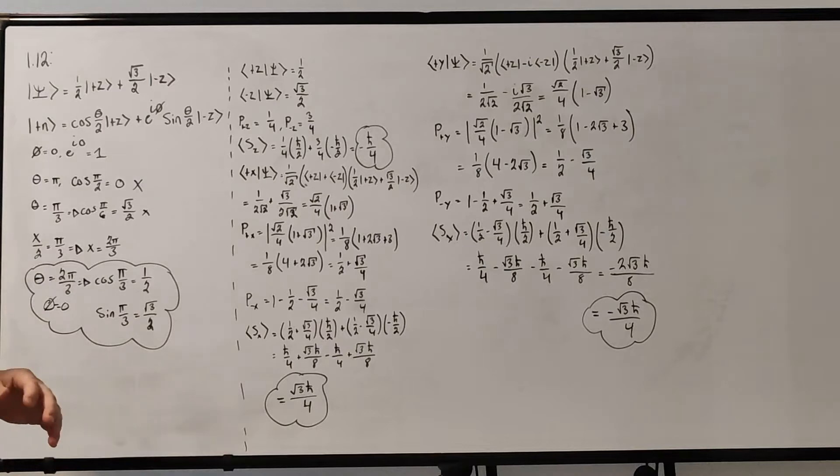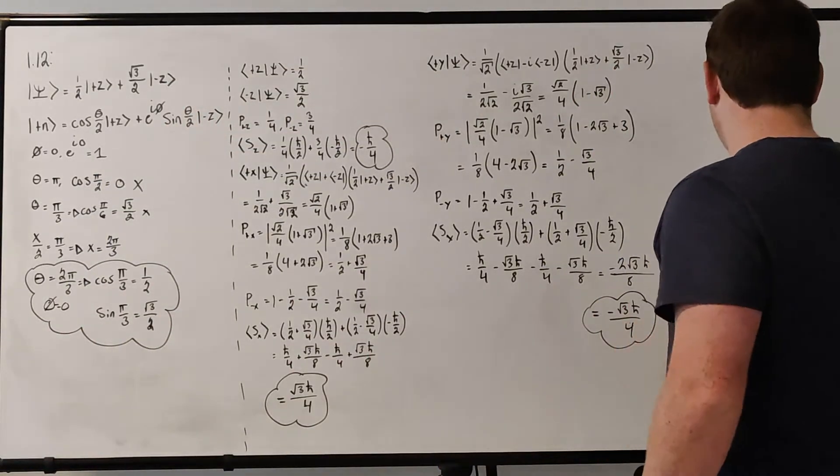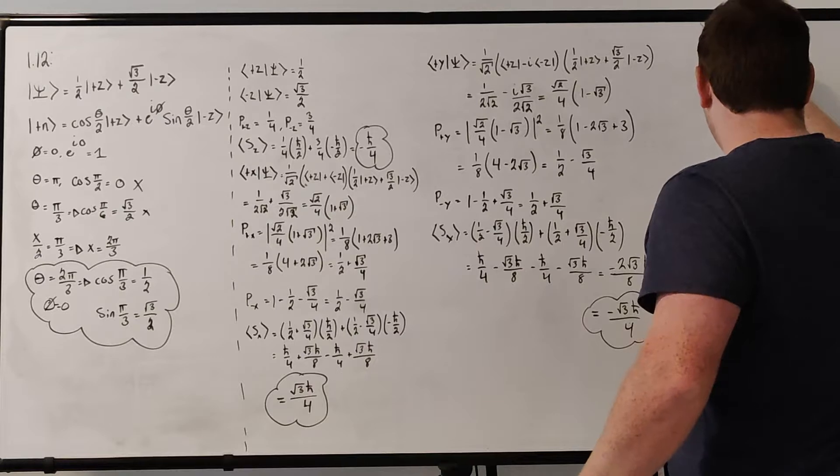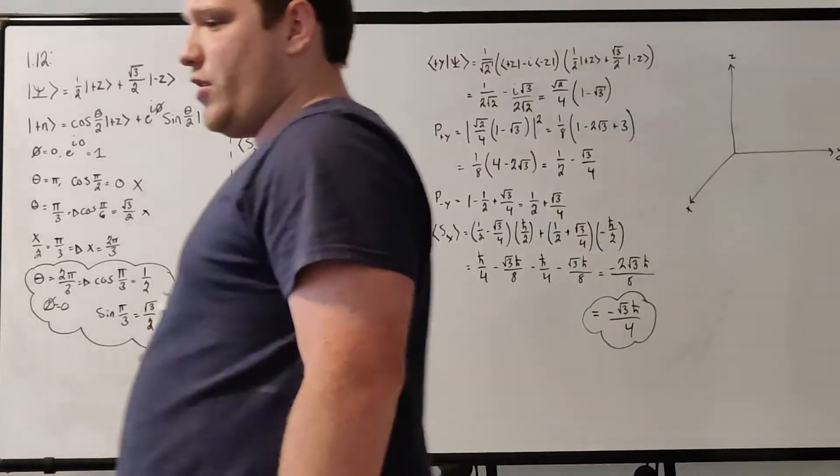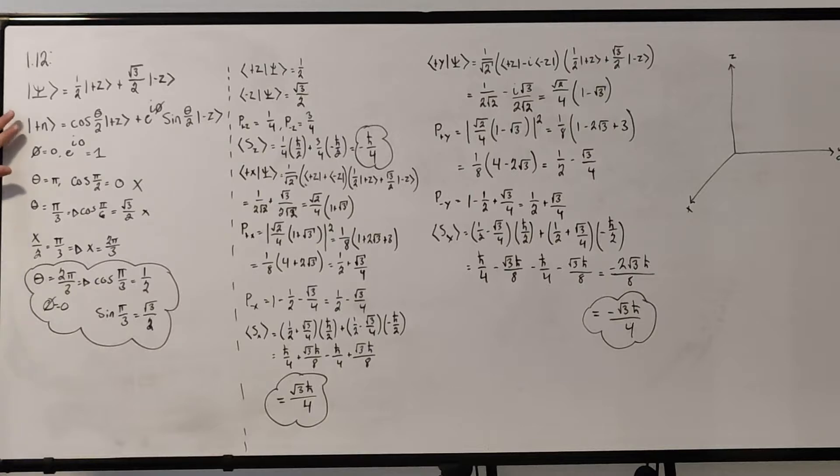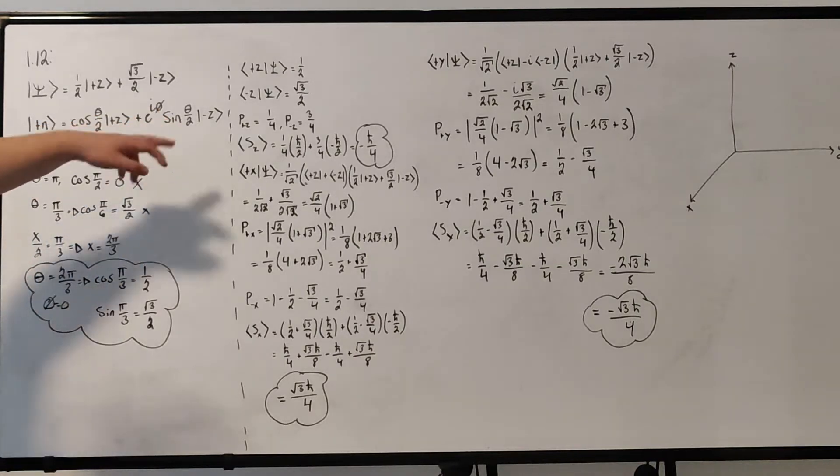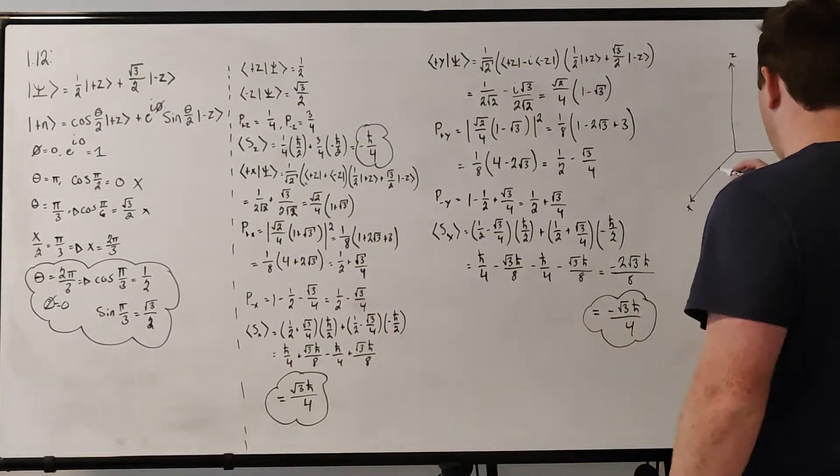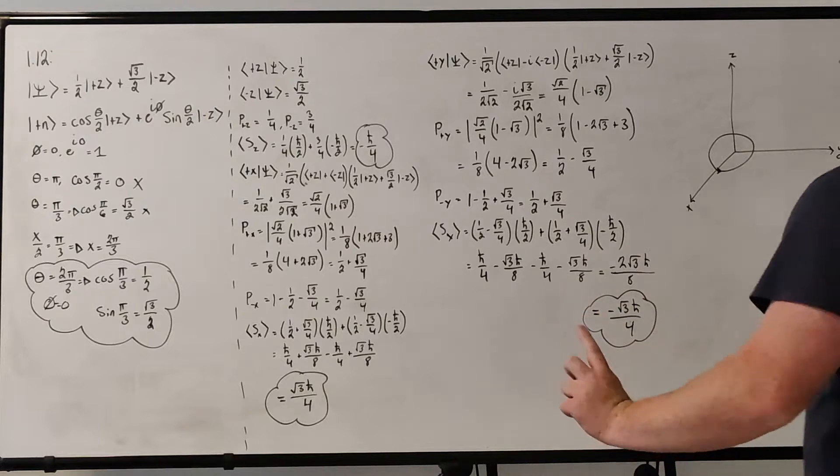since this state is not aligned along z, x, or y completely, it lies along some angle from, if we define our coordinate system like this, where x is going out of the board, y that way, we have z going up. Remember, our state is a generic state for a two-state system that allows us to parameterize any state in terms of this theta and phi number. It is cosine of theta over two plus e to the i phi sine of theta over two, written in the z basis.